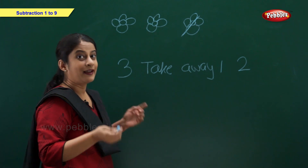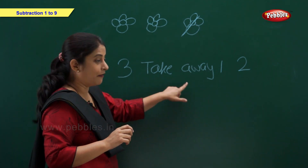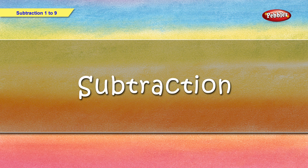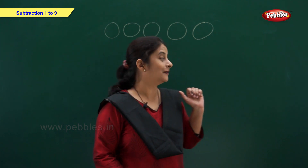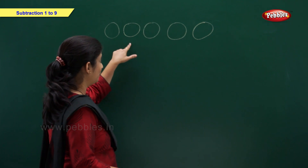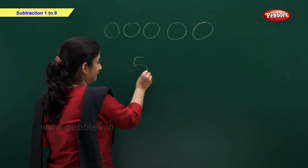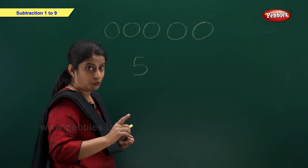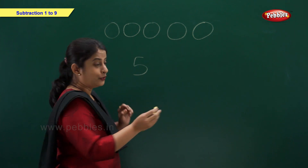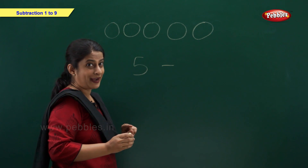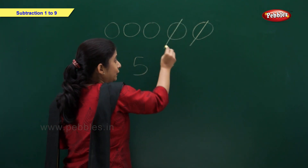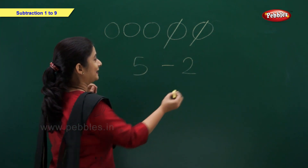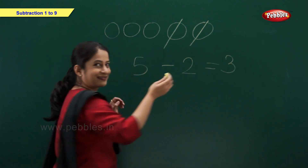Friends, henceforth instead of using 'take away', we are going to use the minus sign. Now let's solve this example: I have 5 balls — 1, 2, 3, 4, 5. I gave 2 balls to my brother. So take away 2 — but remember, we use the minus sign. 1 and 2. So how many balls left? Let's count: 1, 2, 3 — 3 balls.